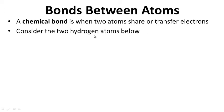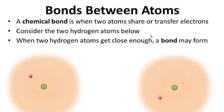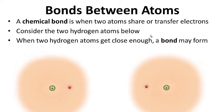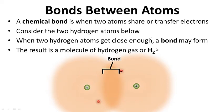Consider two hydrogen atoms. When two hydrogen atoms get close enough, a bond might form. The result is a molecule of hydrogen gas — H2 — two atoms bonded together.